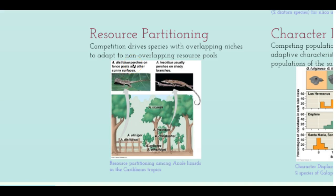Resource partitioning is when, instead of sharing the same resources and being out-competed, different species simply live in different places to avoid competition. For example, many different types of lizards in the same area don't live on the same part of the tree — or even the same tree — so they're no longer sharing the same resources and competition is eliminated. That's good for everyone.